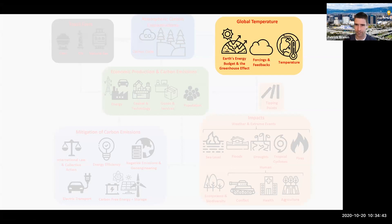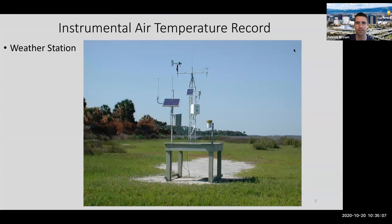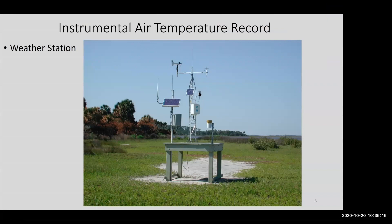The first empirical way to measure temperature is, of course, with a thermometer - represented by this icon here. The most iconic graphs of global warming are graphs of temperature measured with thermometers at the Earth's surface. This would be an example of a modern weather station.